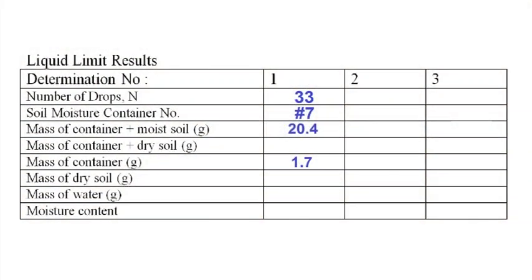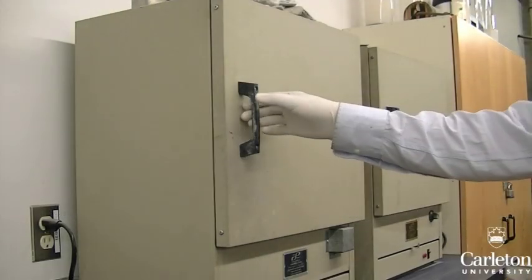For each of your three successful tests, record the number of a moisture container, its mass, and the mass of a sample of wet soil placed into it. Place all three samples in an oven to dry.